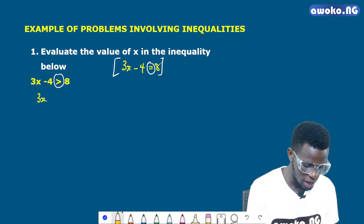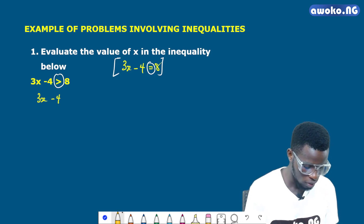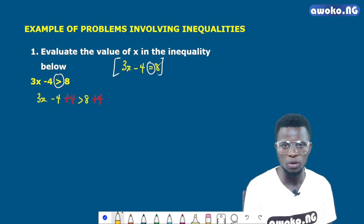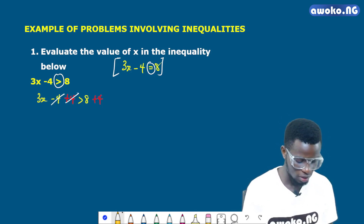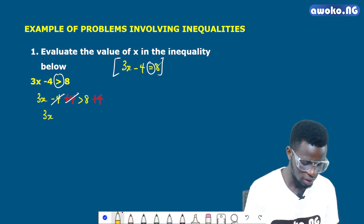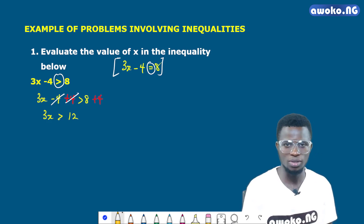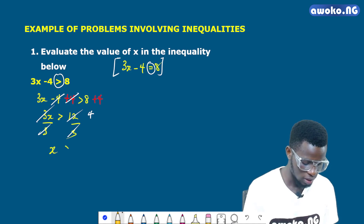So if I decide to add 4 to both sides, I would have 3x minus 4 plus 4 greater than 8 plus 4. The reason I add plus 4 to both sides is to annul the effect of minus 4 on the left hand side, such that x will be allowed to stand alone. This leaves me with 3x greater than 12. Now I am asked to look for x, not 3x, so the next step is to divide through by 3, which gives x is greater than 4.